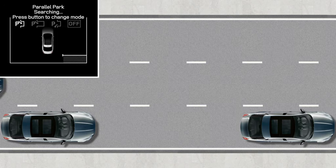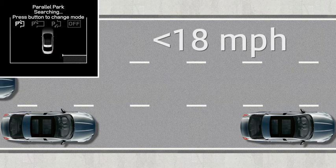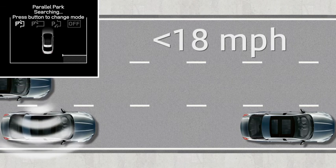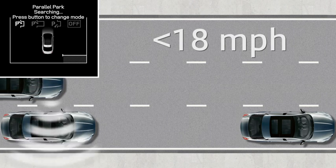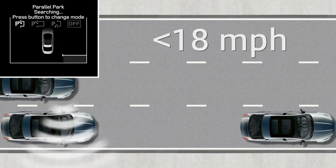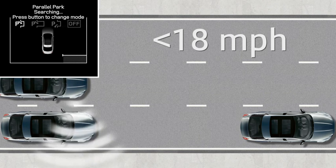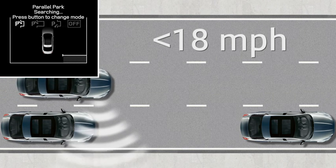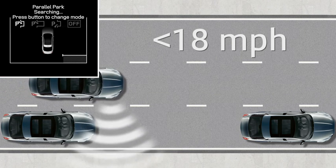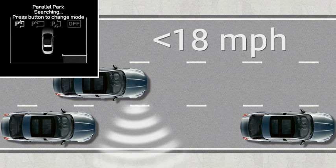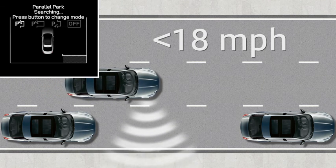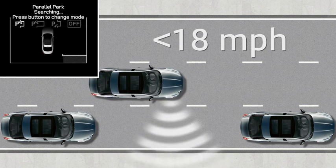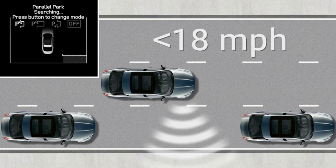As you approach a space, drive slowly past it, leaving a gap of 0.5 to 1.5 metres between your vehicle and the row of parked vehicles. The system's sensors automatically search for a large enough space on the passenger's side.